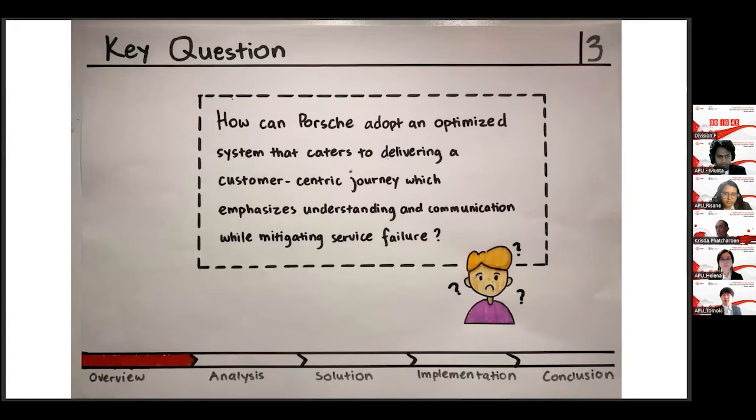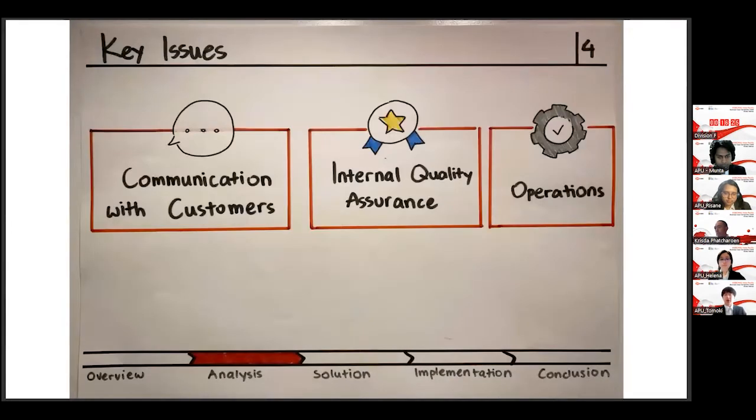These blockades led to the unsuccessful recovery by the dealership. Based on these negative points of reality, such as one-way communication and the length of waiting time, Paul had to face with other variety of problems. We have developed one key question. How can Porsche adopt an optimized system that caters to delivering a customer-centric journey, which emphasizes understanding and communication while mitigating service failure?